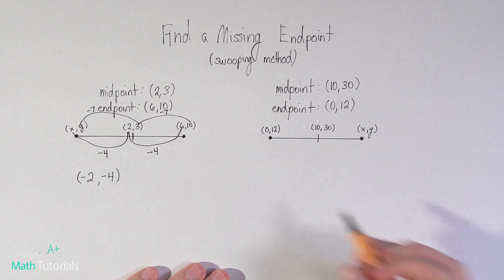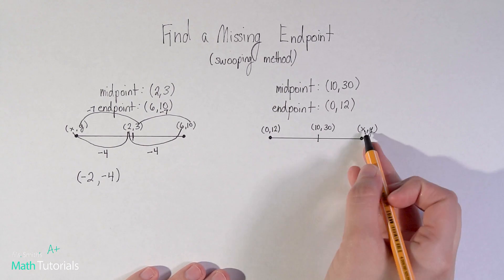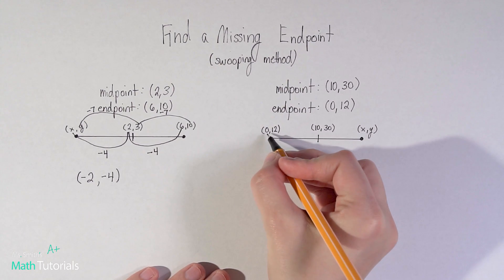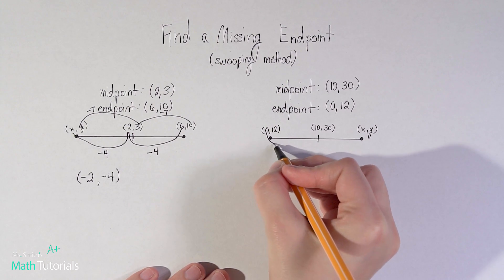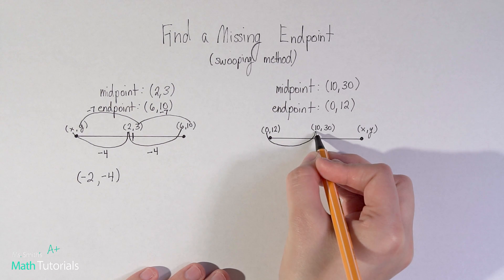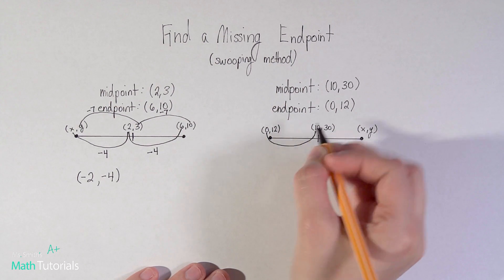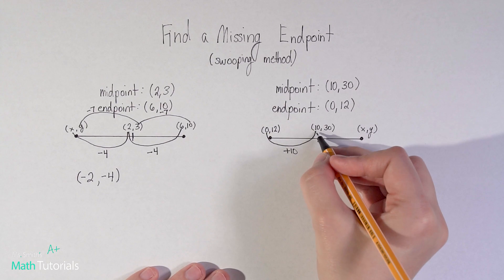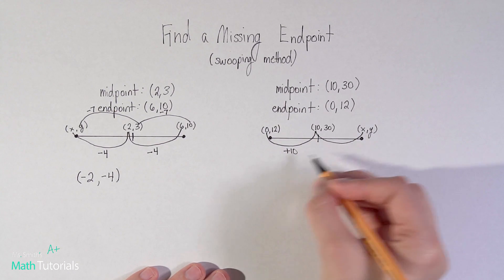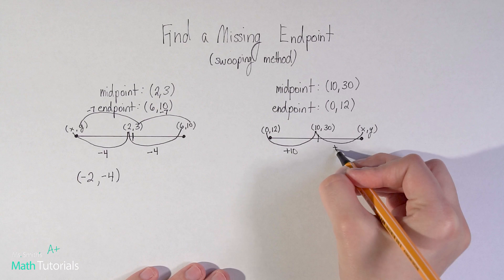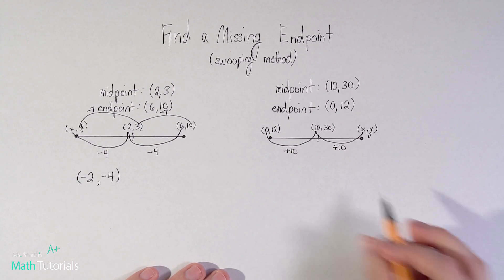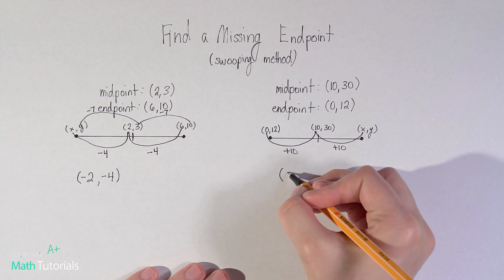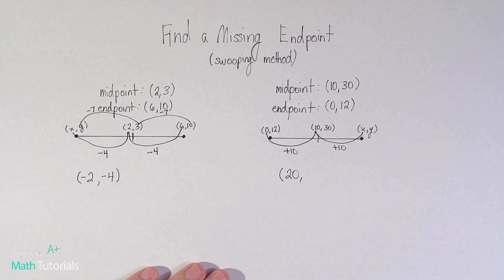So this time we'll swoop this way. That time we went this way, this time we'll go this way. Doesn't actually matter. From one x value to my midpoint x value: 0 to 10, I added 10. So to go from 10 to my next one, I'm going to again do that same pattern, add 10. So what is 10 plus 10? Well, that would be 20. So my x value is 20.